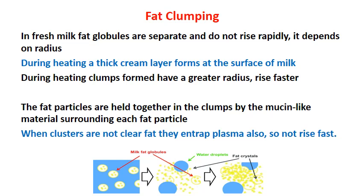In fresh milk, fat globules are separate and do not rise rapidly, as the rate depends on the radius of the fat globule. During heating, a thick cream layer forms at the surface because clumps formed have a greater radius and rise faster. The fat particles are held together in clumps by the mucin-like material surrounding each fat particle. When clusters also entrap plasma, they become heavier and cannot rise as fast. This fat clumping is responsible for the cream layer formation, which is most prominent in heated or boiled milk.